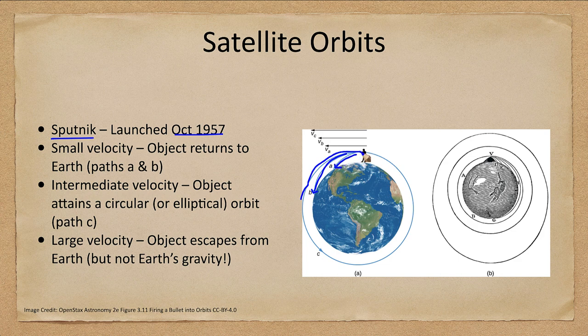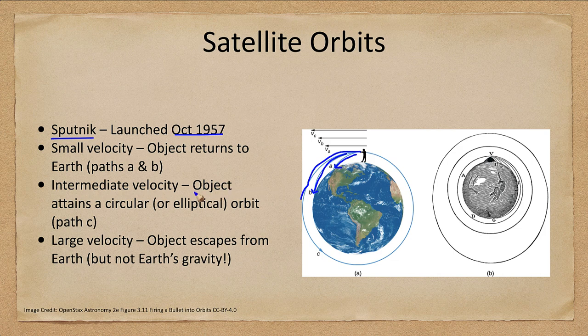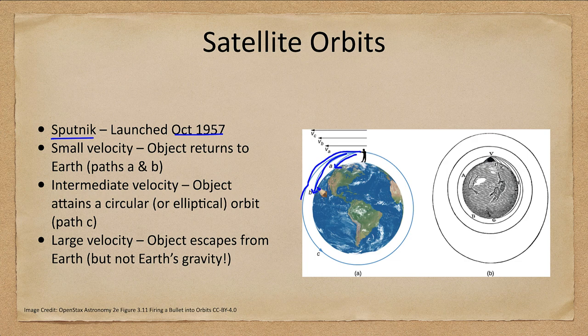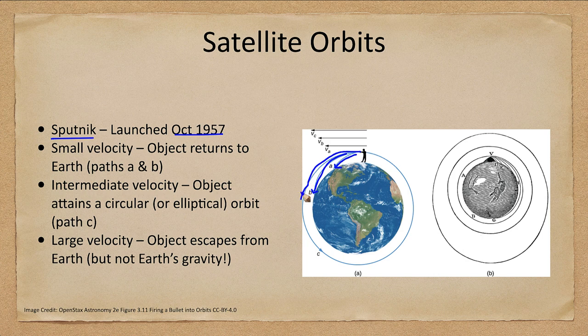Now that only works if there's no atmosphere. So of course, atmospheric resistance would cause these... even something with a very high velocity would lose so much energy in its trip around the Earth that it would never make it that far. But paths A and B will return to Earth; we can get a circular or an elliptical orbit if we get it far enough. And if you give it an even larger velocity, it will actually escape from Earth.